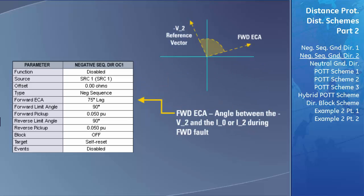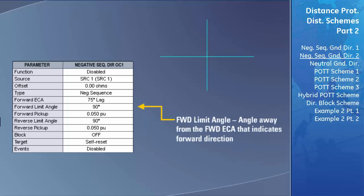The forward ECA setting stands for the element characteristic angle. This setting specifies the expected angle between the reference vector — which for this element is the negative of the negative sequence voltage — and the polarizing current at the time of a fault if the ground current is flowing in the forward direction. This was known as the maximum torque angle in electromechanical relays. The forward limit angle specifies how far from each side of the forward element characteristic angle the polarizing current can be to indicate the forward direction of ground current.